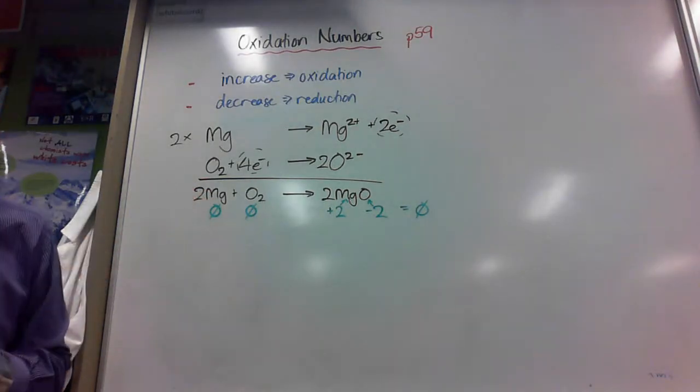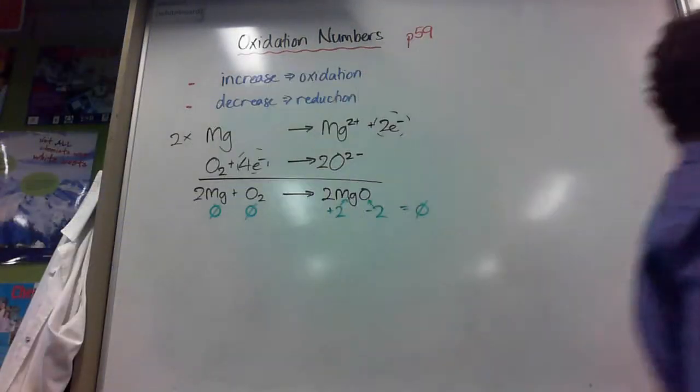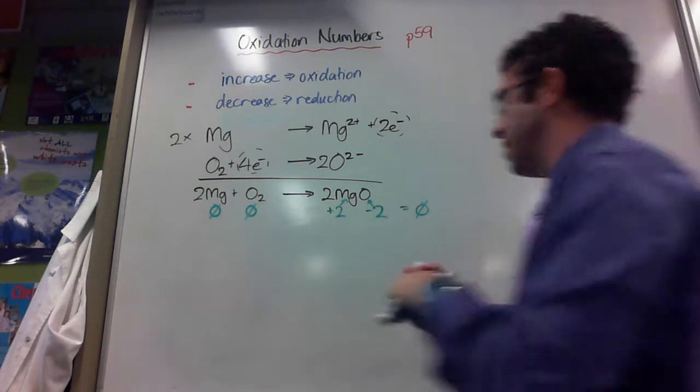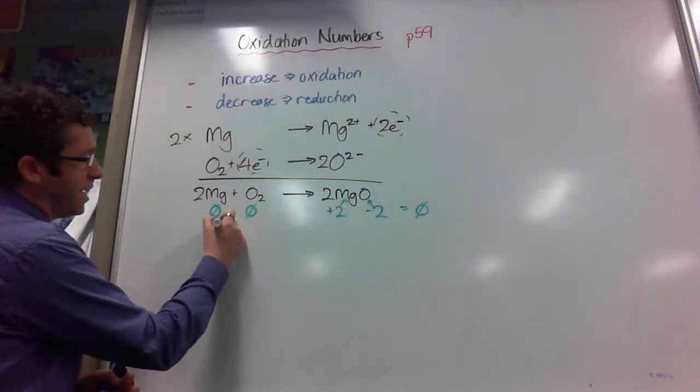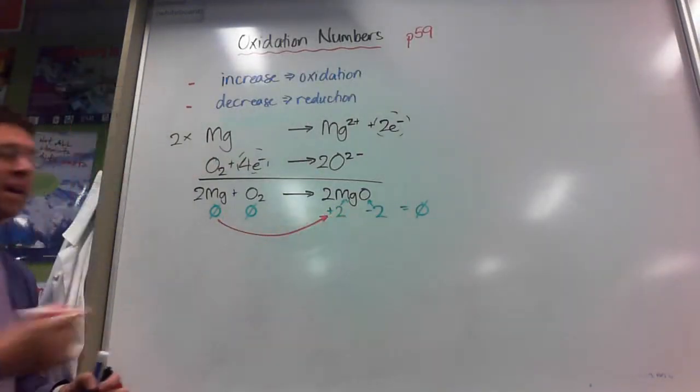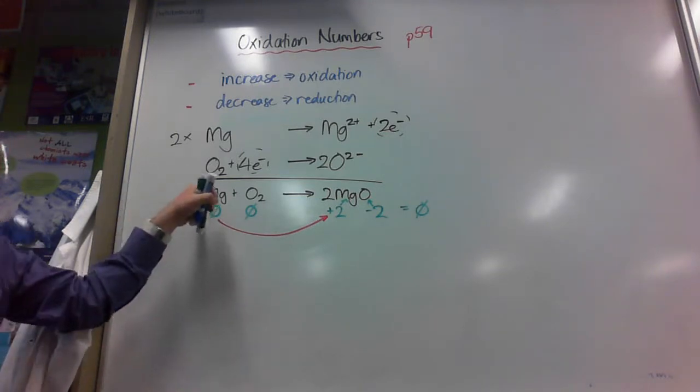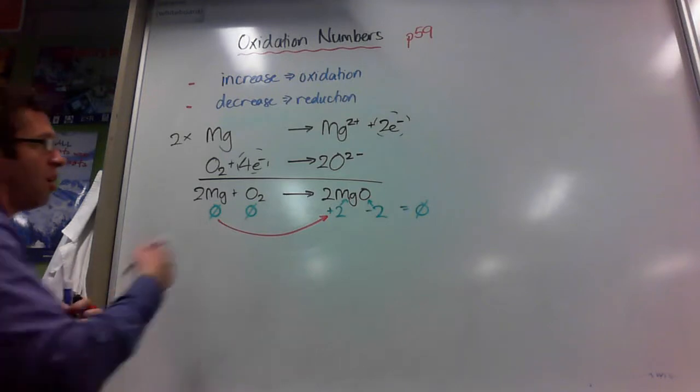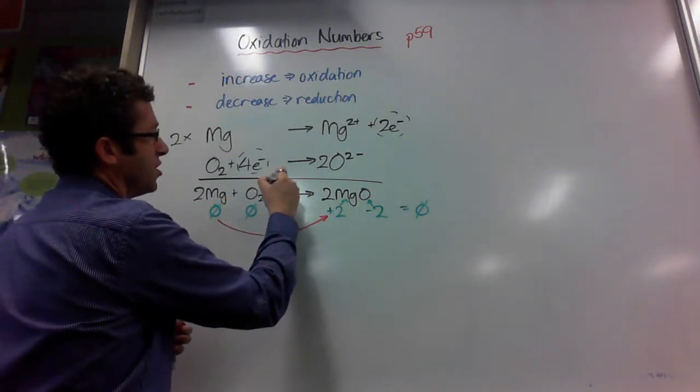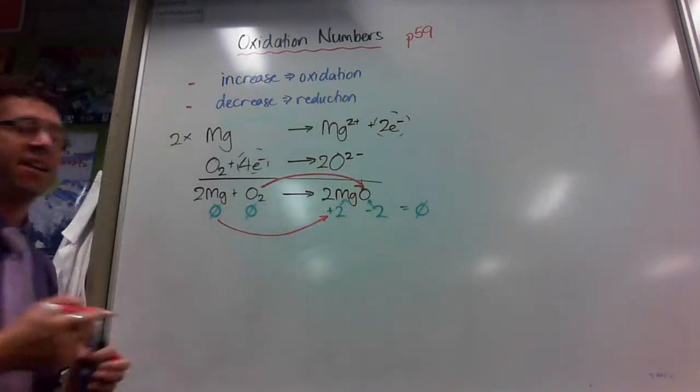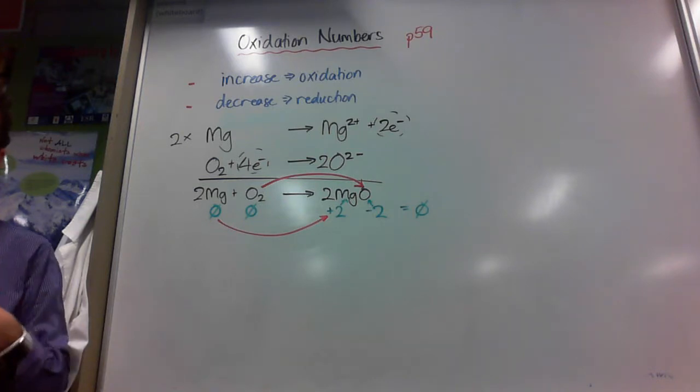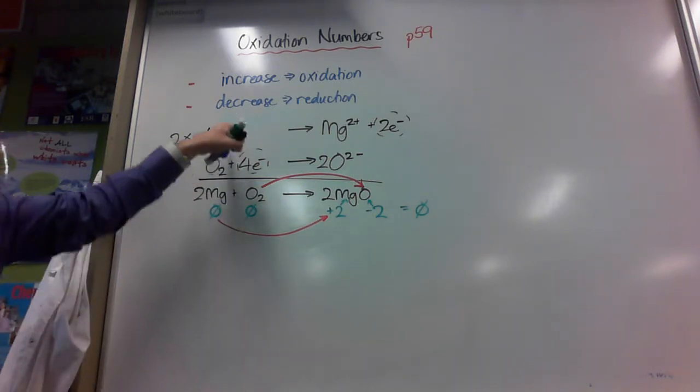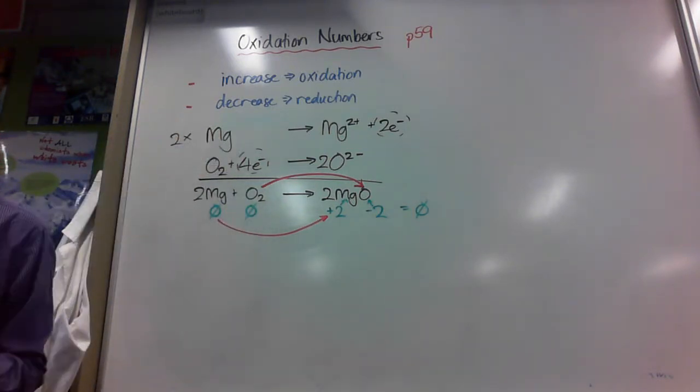So, oxidation numbers. What I can see is that magnesium has gone from being zero to being positive two. It has increased. So, magnesium is being oxidised. I can see that oxygen has gone from zero to negative two. That number has reduced. So, that's reduction. If I have a look at my half equations up here, that's exactly what I see.